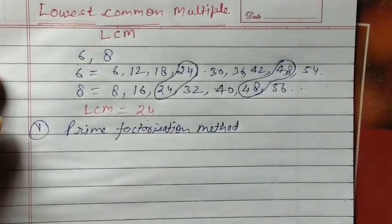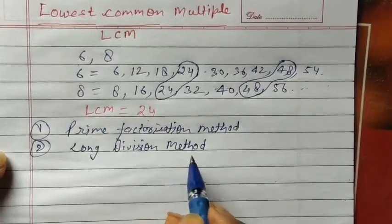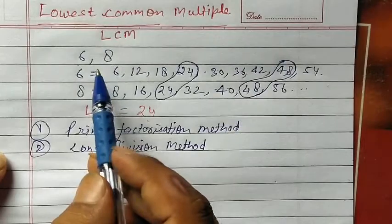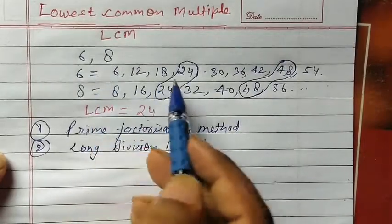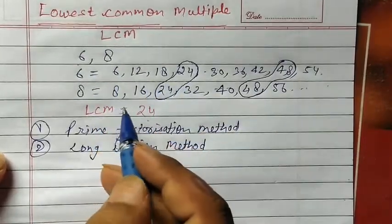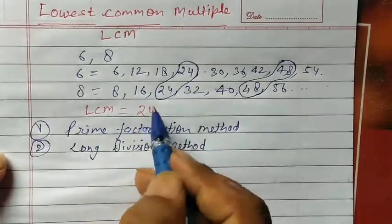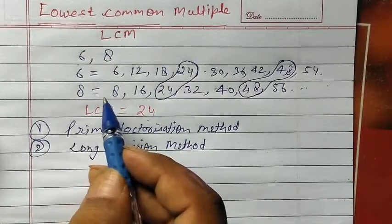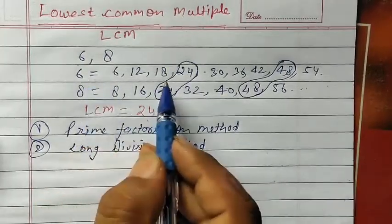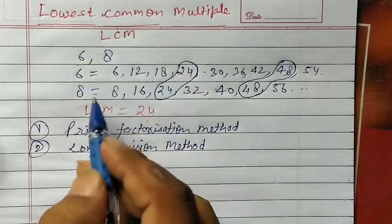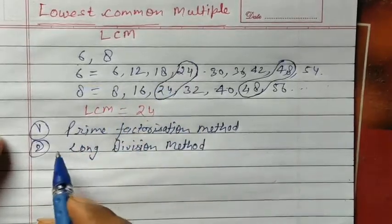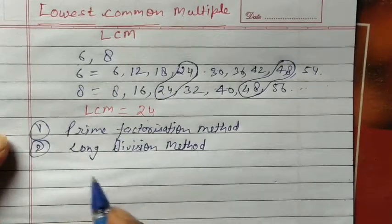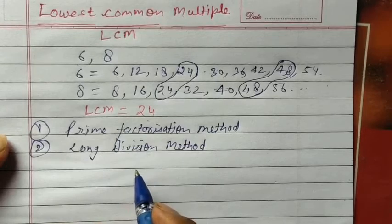Multiple जब हम check करते हैं, table check करते हैं, जिनका table हमें आता है easily, हम find कर सकते हैं lowest multiple. But कभी क्या होते हैं - numbers बहुत बड़े number हो जाते हैं. उस situation में हम table नहीं लिख सकते, बहुत दिक्कत का सामना करना पड़ेगा. इसलिए ऐसी situation में हम prime factorization method या फिर long division method use करते हैं.